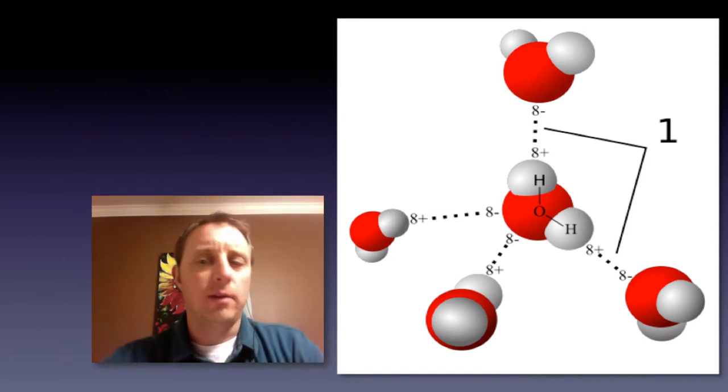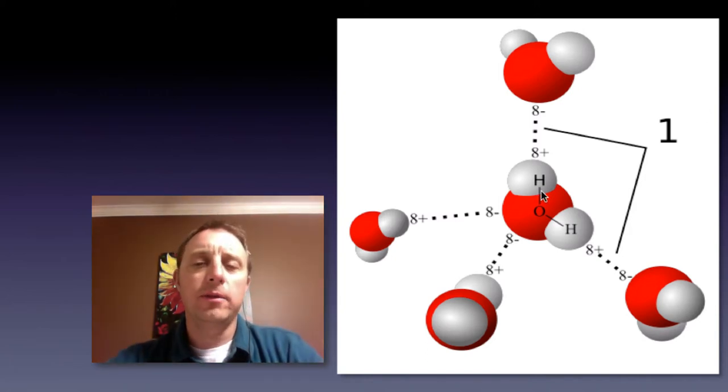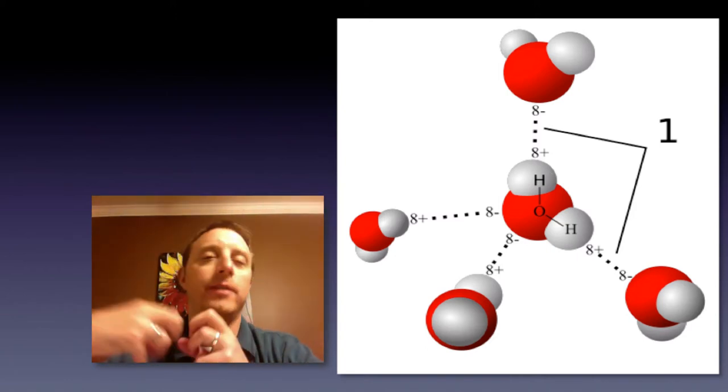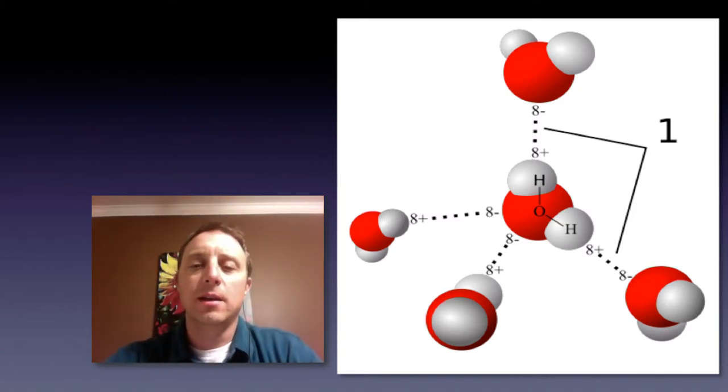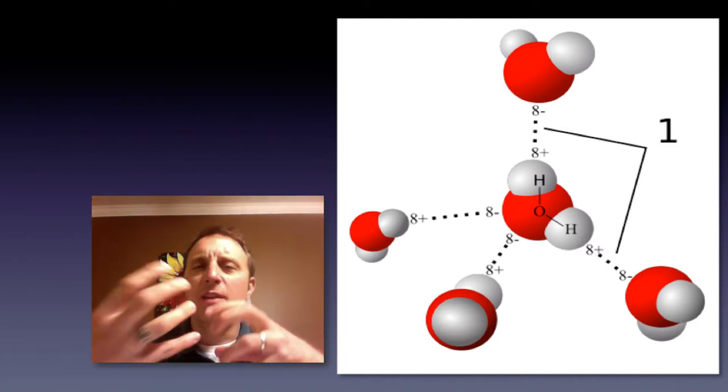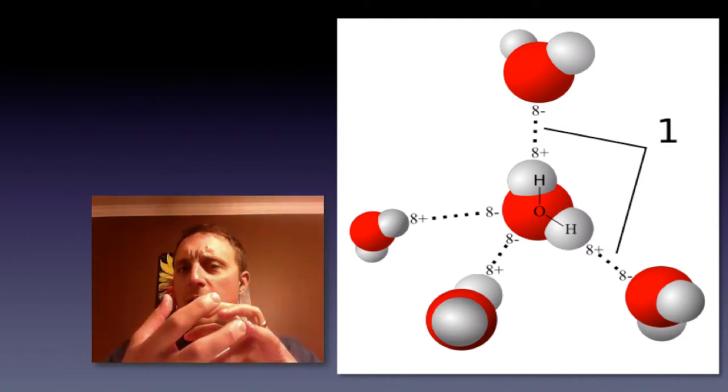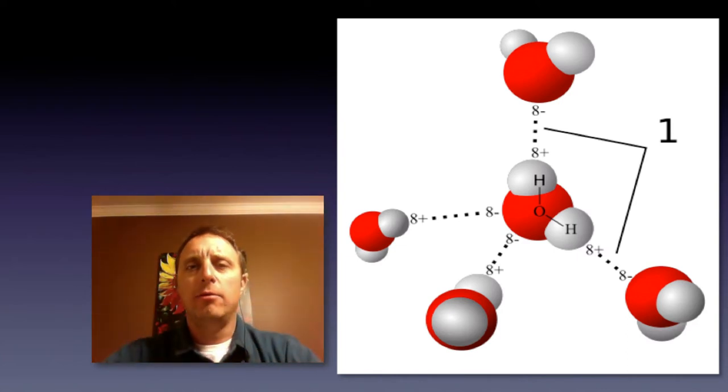So it pulls those electrons away from hydrogen very, very strongly. And hydrogen, being very weakly electronegative, is not really able to do much about it. It can't pull back on those electrons to get them back towards itself. So that means that the electrons tend to spend more time around the oxygen atom than they do around the two hydrogen atoms.